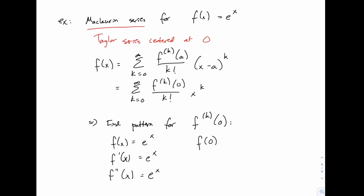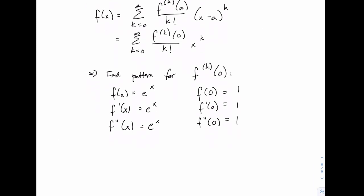We plug in zero to the original function, to the first derivative, to the second derivative, and keep going until the pattern becomes obvious. Here the pattern is almost trivial because every time we get one, and this continues on. So in general, no matter what derivative you're looking at, for this function when you plug in zero you get one. It's really just that simple.